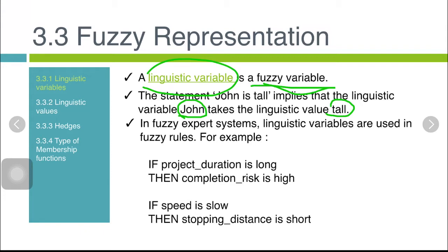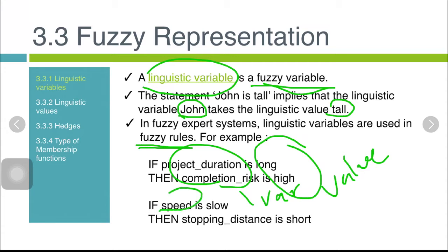In fuzzy expert systems, linguistic variables are used in fuzzy IF-THEN rules. For example: IF project_duration is long THEN completion_risk is high. The next example is: IF speed is slow THEN stopping_distance is short. We have two variables here: speed and stopping_distance, with speed having the value slow and stopping_distance having the value short.